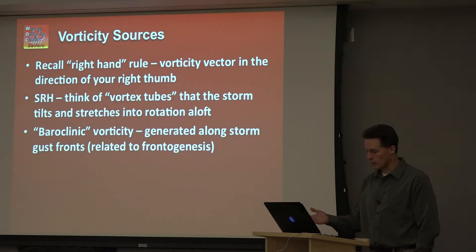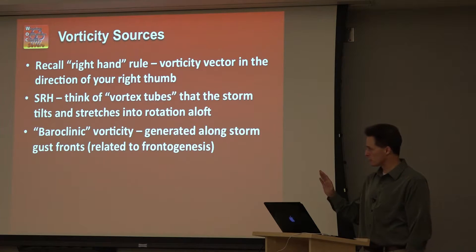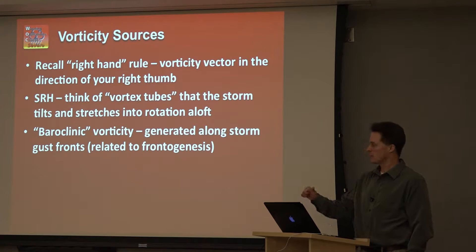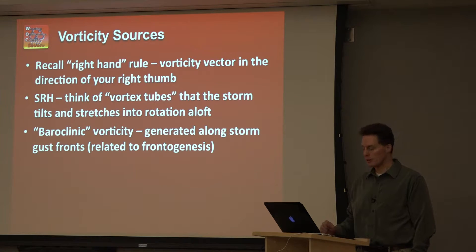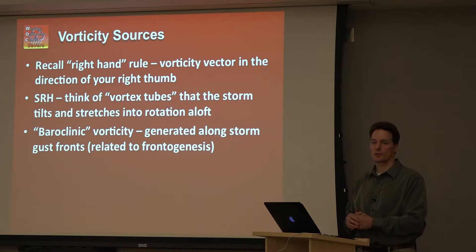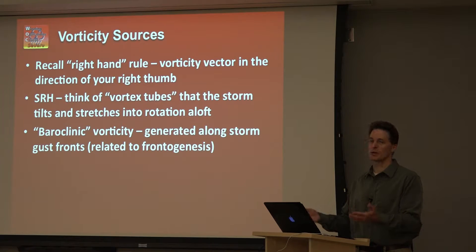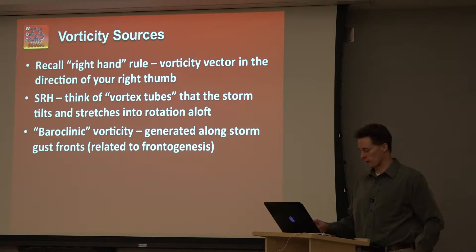We recall the right-hand rule from the previous lessons: your fingers on your right hand curl in the direction of the shear as you move upward, and your right thumb points in the direction of the vorticity vector. That's what we think of as the vortex tubes — a reflection of horizontal vorticity tilted and stretched in the vertical to provide the rotation source for the mesocyclone. SRH, storm relative helicity, is a way to quantify those vortex tubes.